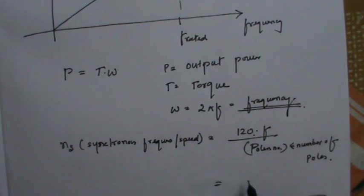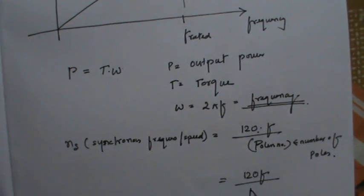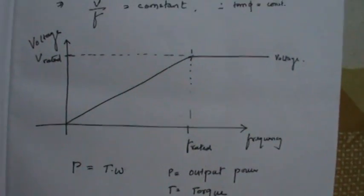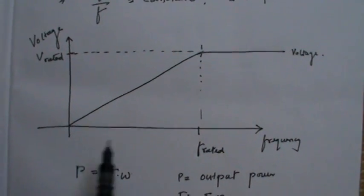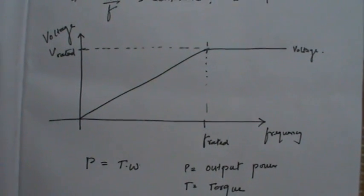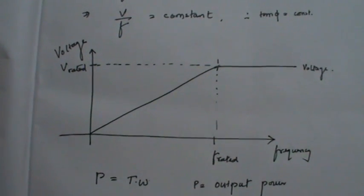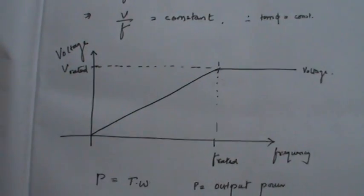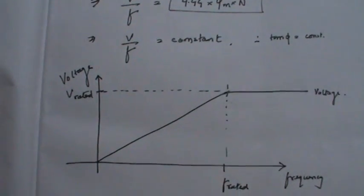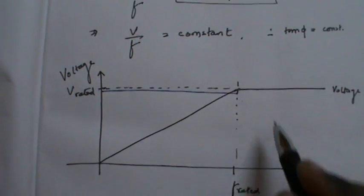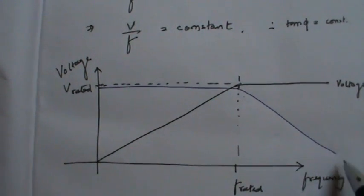Coming back to the graph: the horizontal axis is frequency and the vertical axis is voltage. Now I will draw the torque curve. In the region below rated frequency, the voltage is increasing while V by F is constant, which means the torque in this region is constant. After the rated frequency, the torque will decrease. So this is the graph of torque versus frequency.